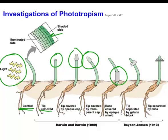Boysen Jensen was another experimenter who worked on this in 1913. He did something rather clever — he used a gelatin block, kind of like jello without any flavor, and he discovered that whatever is in the tip is able to travel through that gelatin block by the process of diffusion. So he figured out it's a chemical — some kind of molecule being created in the tip that drifts by diffusion down into the rest of the plant.